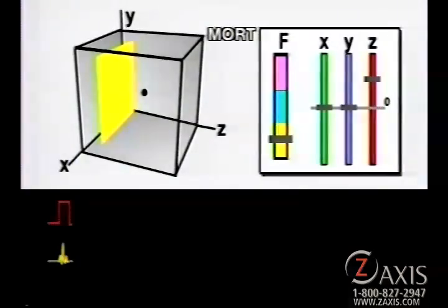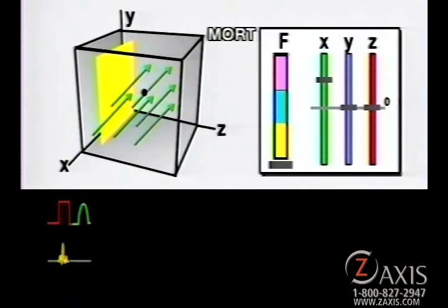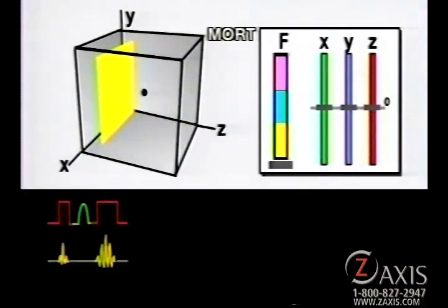In the multiple image orthogonal mode, or MORT, the gradient coils are again turned on individually, but different frequencies of RF are used to move the image plane through the scanning volume along a single axis.